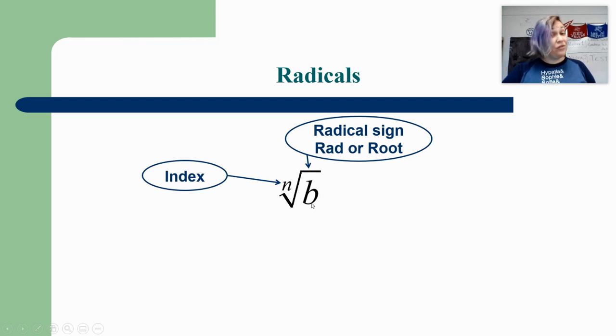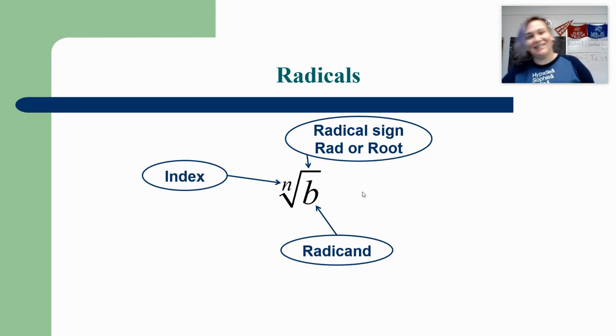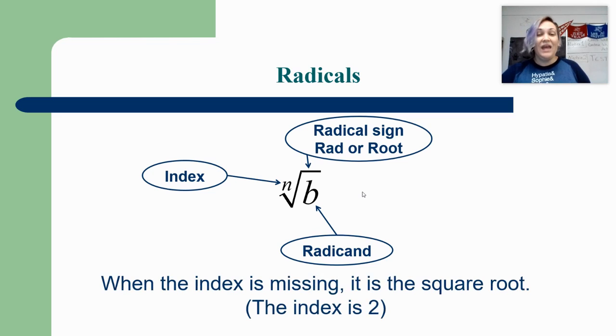Now the number inside the radical sign also has a special vocabulary word. It's called the radicand. I'm going to be honest, I don't say that word very often, but it does exist. And again, the most common type of radical is a square root. And so since we're kind of lazy, and that's what happens the most, we don't usually write the number two here as our index, because that's the most commonly used one.